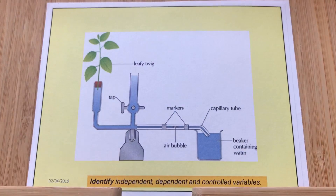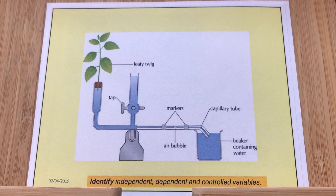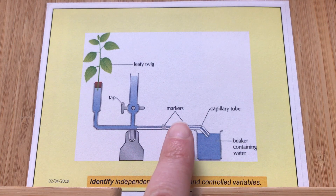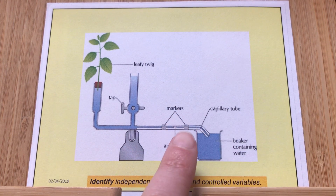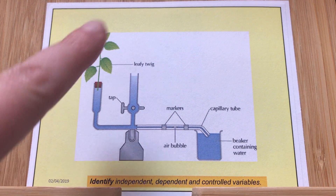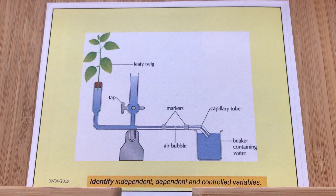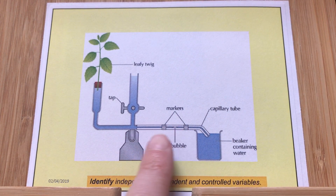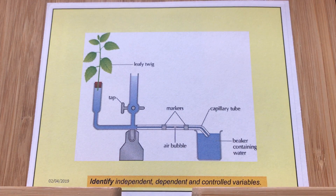This piece of equipment is called a potometer and we can use it to investigate the rate of transpiration in different situations. It has an air bubble, and we can change the number of leaves, apply a hot or cool breeze using a hairdryer, or no breeze at all. Over a fixed period of time — say five or ten minutes — we measure how much the bubble has moved, which tells us how much water has been lost by transpiration.